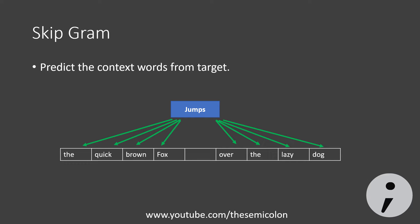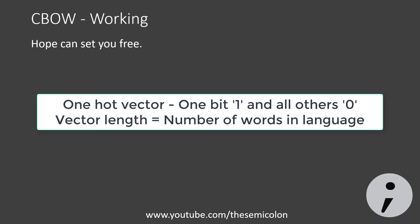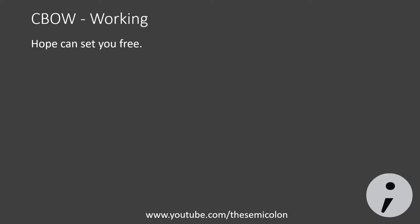We'll need a smaller example, because the English language has around 13 million words in the dictionary, which is quite huge. So let's consider a language which has just five words: can, free, hope, set, and you — and nothing else. We initially encode each word as a one-hot vector. To generate word vectors from this vocabulary, we iterate through a corpus. For simplicity, let's assume our corpus has just one sentence: 'hope can set you free.'